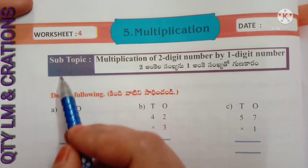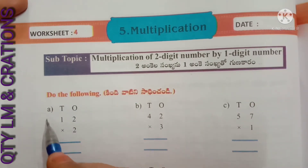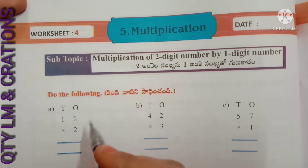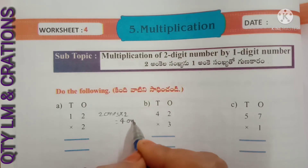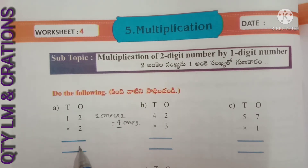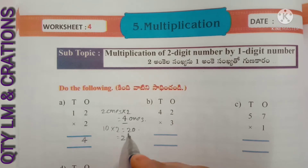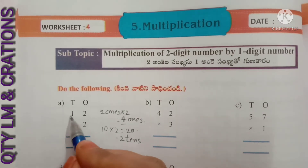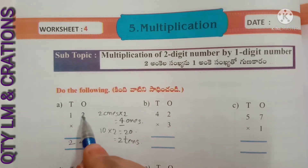Next, worksheet number 4, subtopic: multiplication of a 2-digit number by a 1-digit number. Do the following. A: 12 into 2. We multiply 2 ones with 2 and get 4 ones — write 4 in the ones column. Next, multiply 1 ten with 2: one ten into two equals twenty, which is 2 tens — write 2 in the tens place. So 12 into 2 gives 24. The product is 24.